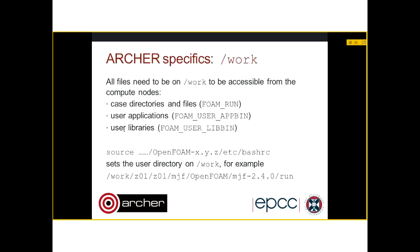What are the differences you have to be aware of on Archer? All files have to be on /work to be accessible for the compute nodes — your case directories and files all have to be on /work. So your foam run directory will be somewhere on /work. In addition, your user applications and user libraries have to be on /work. OpenFoam is dynamically linked, so those have to be somewhere accessible to the compute nodes when you start up OpenFoam. To make this easier, when you set up a version of OpenFoam using the bash RC file, it will set the user directory to /work.